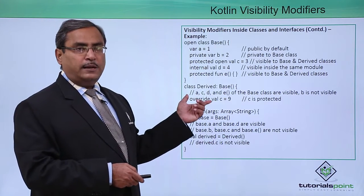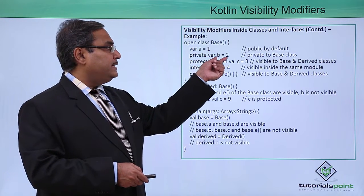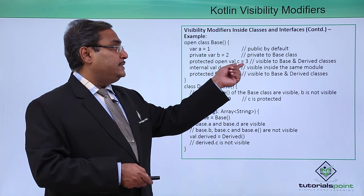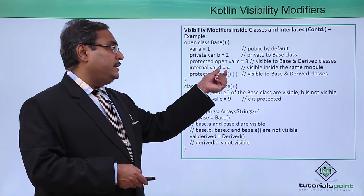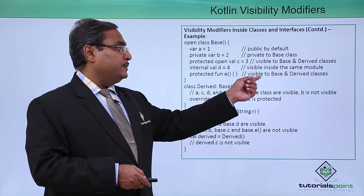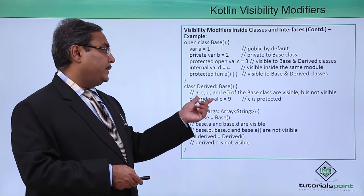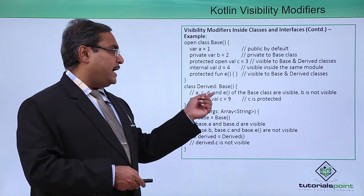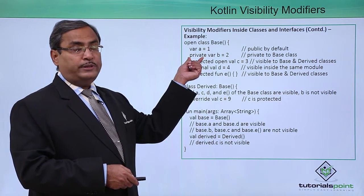Let us look at an example. In the base class: 'bar a = 1' is public by default; 'private bar b = 2' is private to the base class; 'protected open val c = 3' is visible to both base and derived classes; 'internal val d = 4' is visible inside the same module; and 'protected function e' is visible to both base and derived classes. In the derived class, a, c, d, and e from the base class are visible, but b is not visible because it has the private modifier.